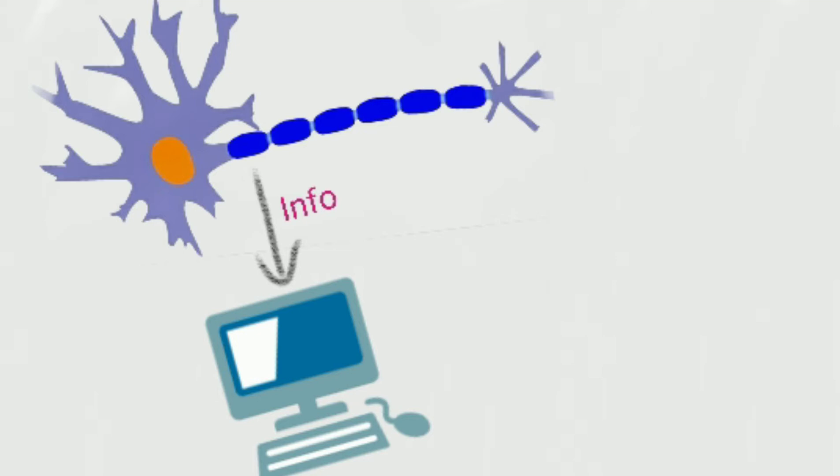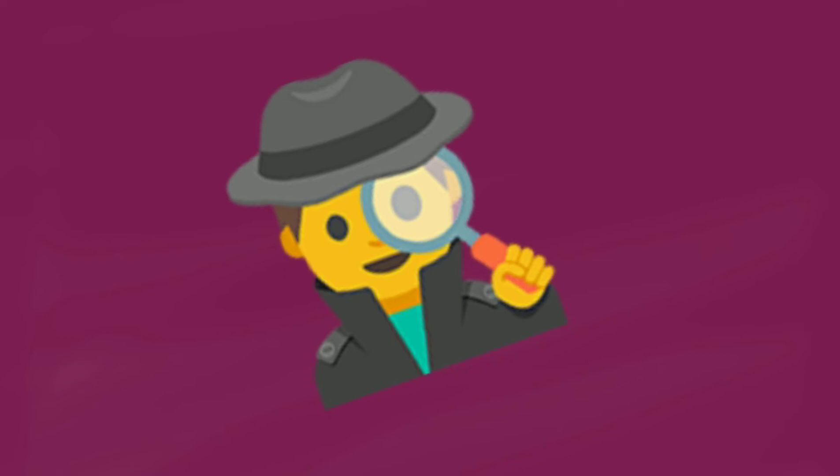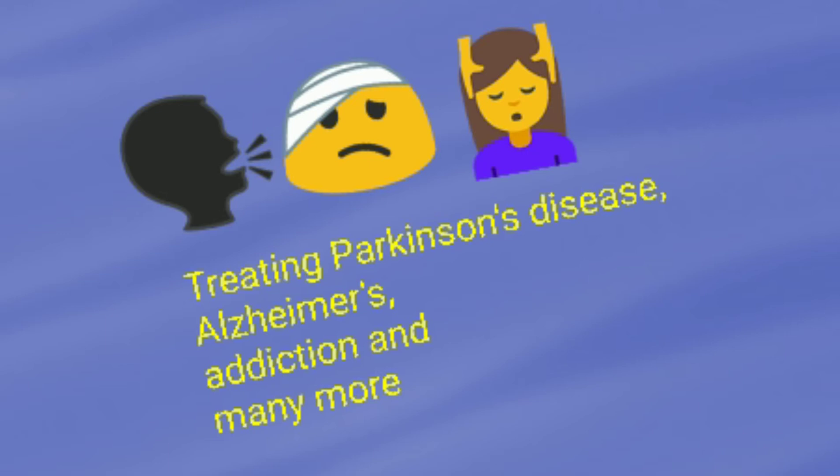Brain-computer interface facilitates the transfer of information from neurons to a computer, ranging from finding answers to some of the fundamental questions regarding behavior, pain, deep brain stimulation, Parkinson's disease, Alzheimer's, addiction, spinal cord disorders, and many more.